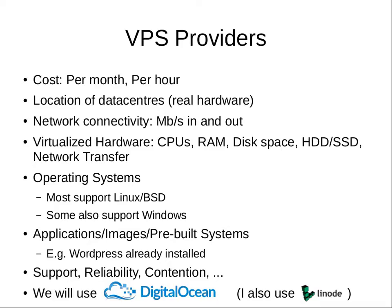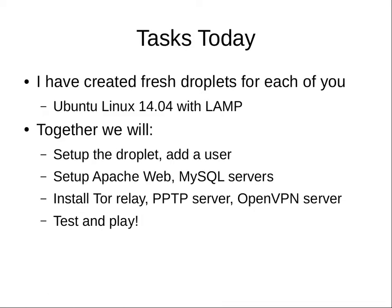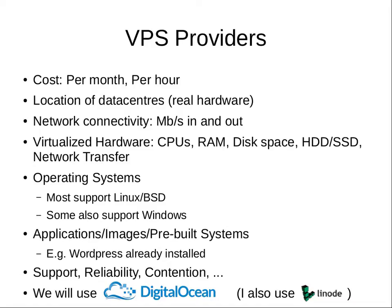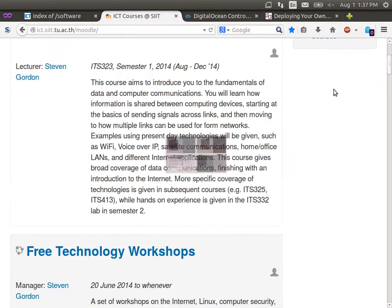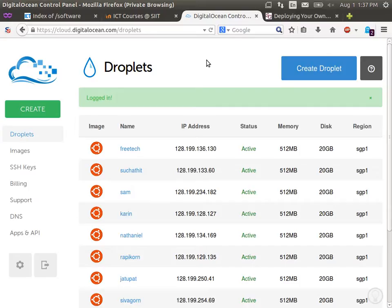We're going to use VPSs provided by a company called Digital Ocean. They're quite a popular, well-known company worldwide, providing a competitive price for what we want to do. I hadn't used them before this workshop — I've used Linode in the past, another provider of Linux VPSs. I've logged into my Digital Ocean account; I'll zoom in where necessary. Digital Ocean calls their VPSs "droplets."